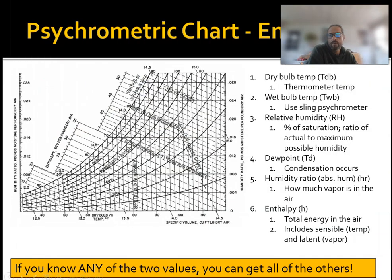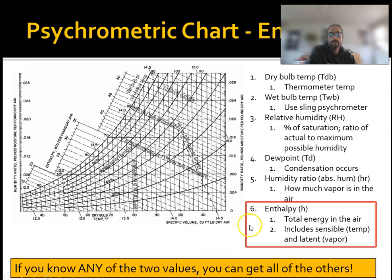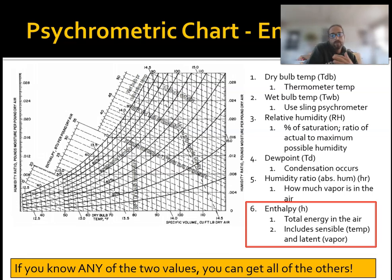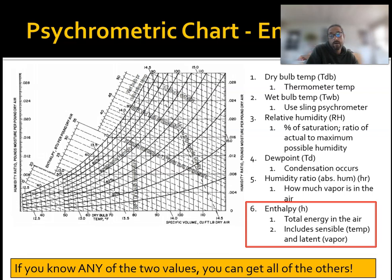We're going to focus on enthalpy. Enthalpy is the total energy in the air. We're probably used to thinking of temperature as our indicator of how much energy is in the air, and temperature is the kinetic energy of the molecules of a substance — that's part of enthalpy. But also included in enthalpy is latent heat, or water vapor. The water vapor impacts the amount of enthalpy in air.